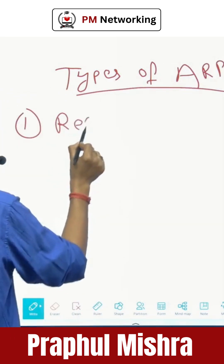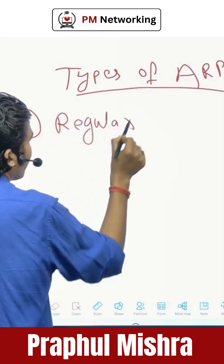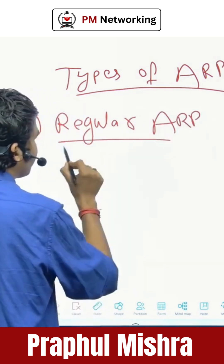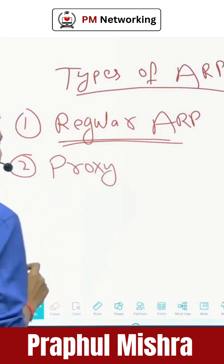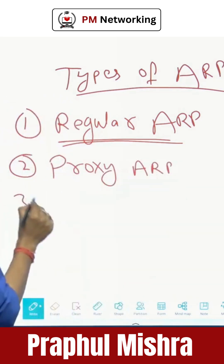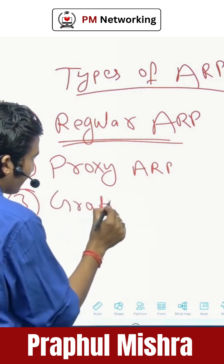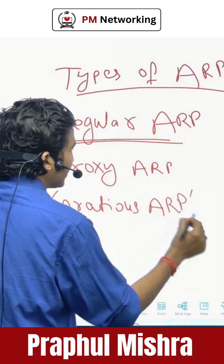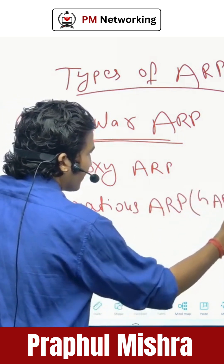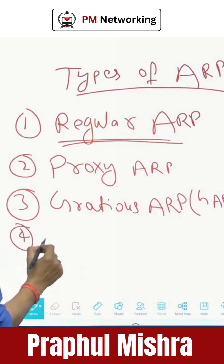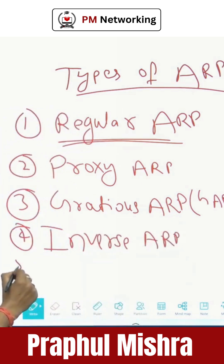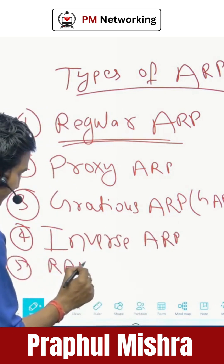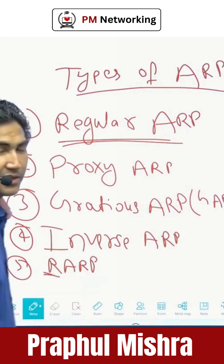The first type of ARP is called regular ARP, which we discussed, used to resolve MAC address from the IP address. Second type of ARP is called proxy ARP. Third type of ARP is called GARP, gracious ARP. Fourth type of ARP is called inverse ARP, and fifth type of ARP is called reverse ARP, RARP.